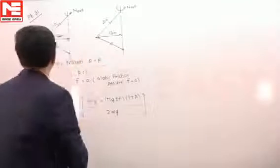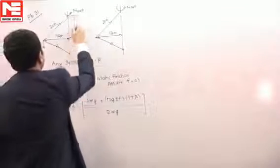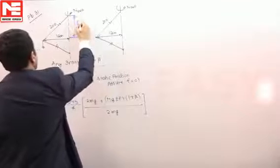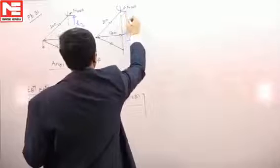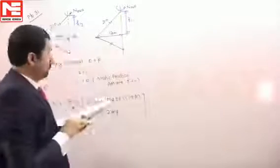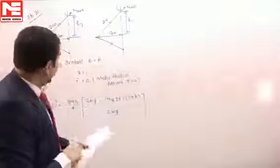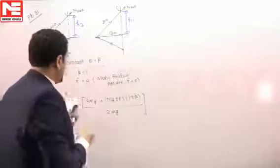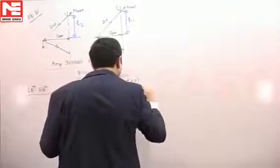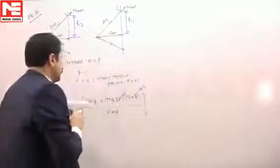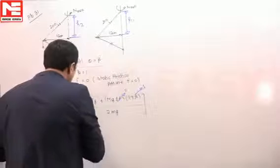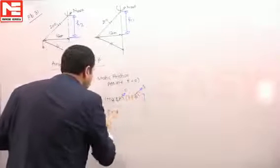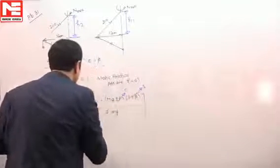And we know this is our h1. So we can directly write here static friction value is 0 and k value will be equal to 1. So this 2 and this 2 will be cancelled, g and g will be cancelled.